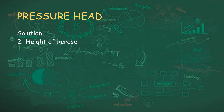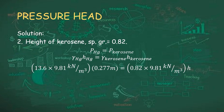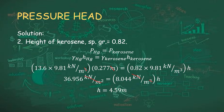Next, we are going to determine the height of kerosene with a specific gravity of 0.82. Using the same equation: specific gravity of mercury 13.6 times 9.81 kN/m³ times 0.277 m equals specific gravity of kerosene 0.82 times 9.81 kN/m³ times the unknown height h. So 36.956 kN/m² equals 8.044 kN/m³ times head. Simplifying and cancelling out units, we get 4.59 meters as the height of kerosene.